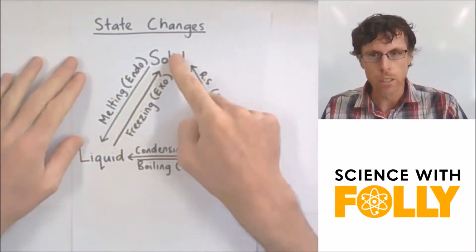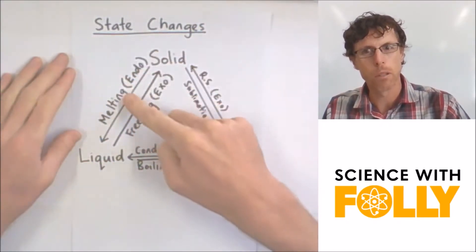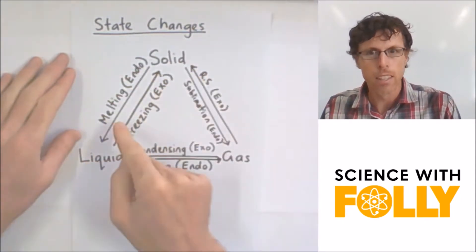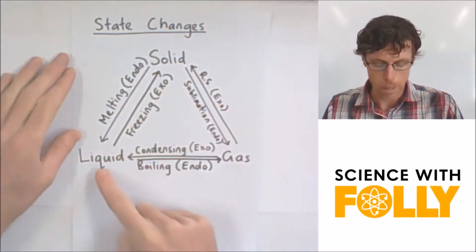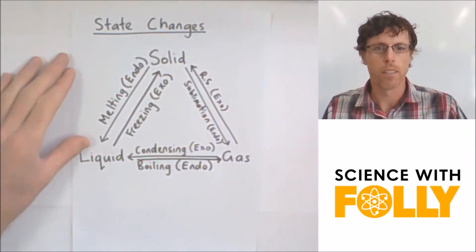As you can see, when a solid melts, it turns into a liquid, and that's an endothermic reaction because it requires an energy input. But when it freezes, it's giving off energy, so that's an exothermic reaction. Same thing, liquid to a gas, or gas to a liquid, or sublimation in both ways.